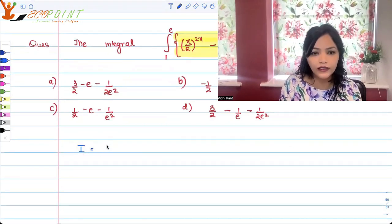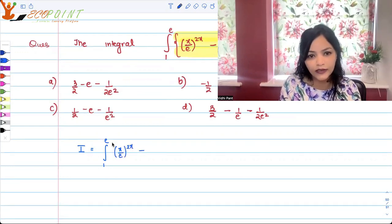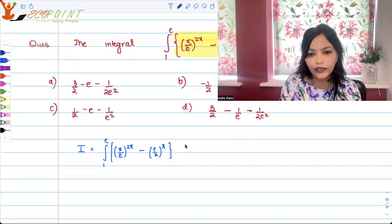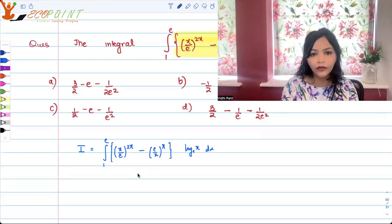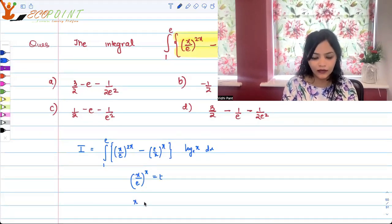If this is I, let me just write it down once again. So 1 to e, it is x upon e to the power 2x minus e upon x to the power x, whole thing multiplied by log base e x dx. So natural log. Now, if you put x upon e to the power x as t...